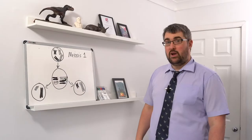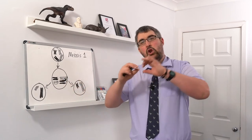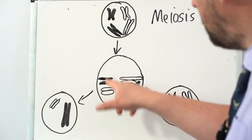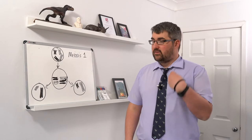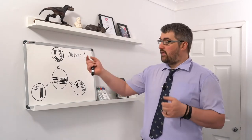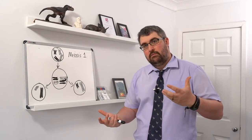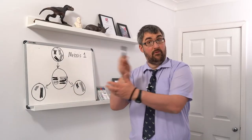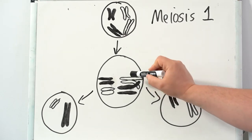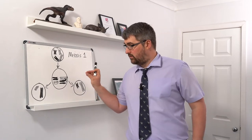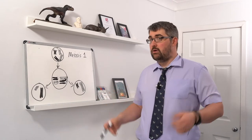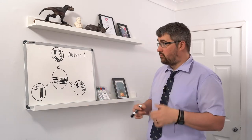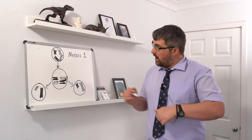The homologous pairs form randomly — we call this independent segregation. For example, the black chromosome and white chromosome of a pair could be oriented either way completely randomly. Across all 23 human chromosome pairs this produces enormous variation — well into the millions of possible arrangements. This already significantly increases genetic diversity. Additionally, another process called crossing over or chiasmata is also occurring.